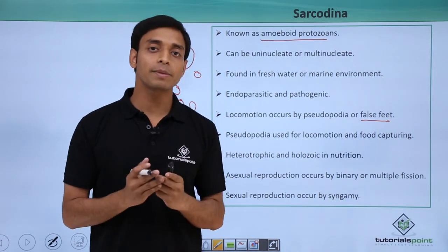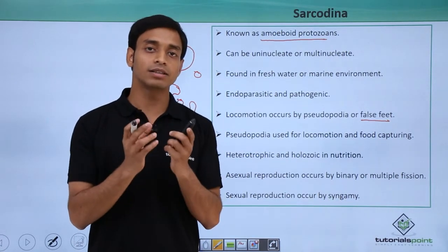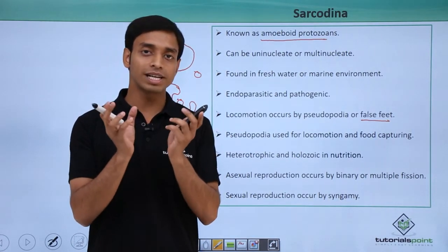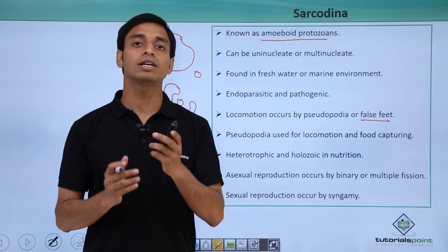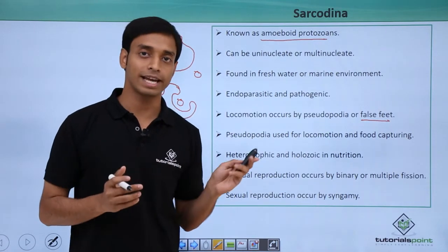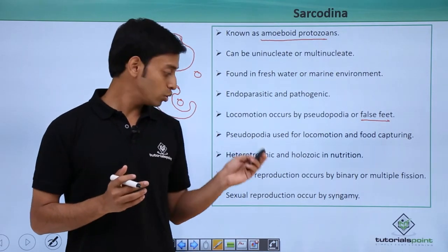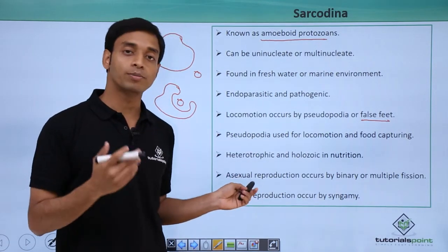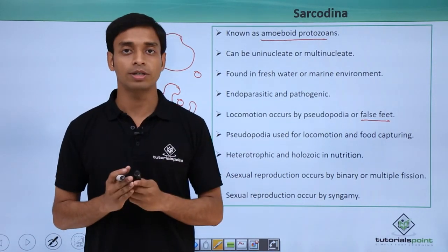Syngamy is nothing but two cells fusing together to form a diploid zygote. So Sarcodina can also reproduce sexually.